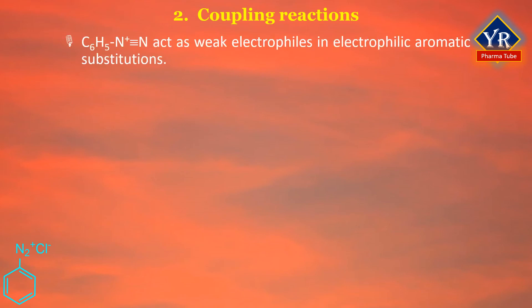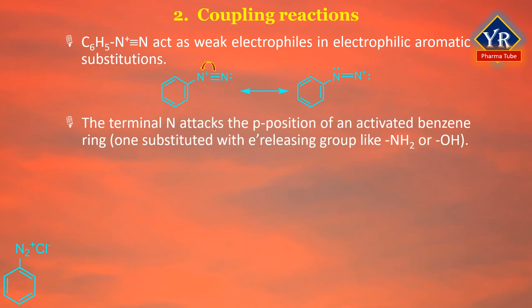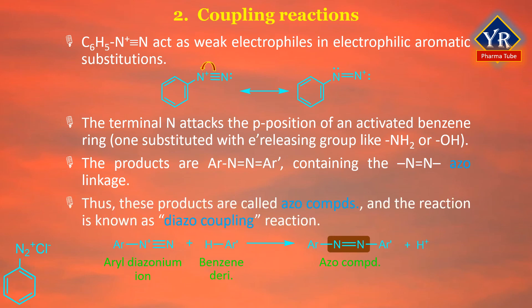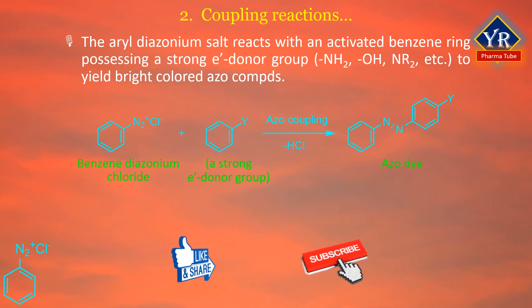Coupling reactions of aryl diazonium salts: aryl diazonium ions act as weak electrophiles in electrophilic aromatic substitution. Resonance structures show that both nitrogens carry a partial positive charge. The terminal nitrogen attacks the para position of an activated benzene ring — one substituted with an electron-releasing group like amino or hydroxyl groups. The products contain the azo linkage and are called azo compounds; the reaction is called diazo coupling. Aryl diazonium chloride reacts with activated benzene rings possessing strong electron donor groups such as amine, hydroxyl, or tertiary amines to yield brightly colored azo compounds.